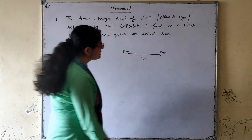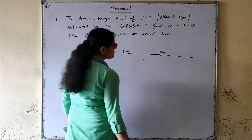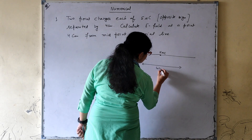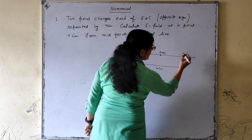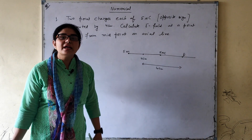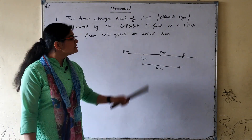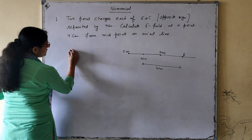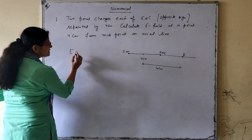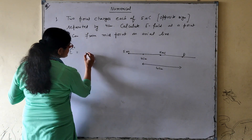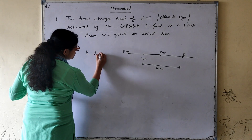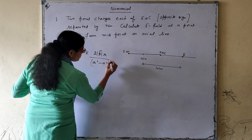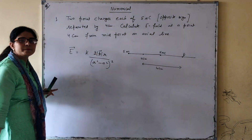For the axial line, we directly use the formula of the axial line. The point P is at 4 centimetres from the midpoint on the axial line. When we talk about the axial line, we will directly use the formula: E = k · 2pr / (r² - a²)².